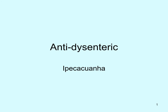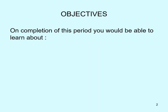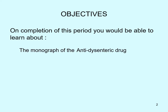Dear learners, today we will see the drug used in dysentery under the topic anti-dysentrics. The singular drug under this topic is Ipecacuna, also called Ipecac. The major objectives of this topic are that students are able to learn about the monograph of anti-dysentric drugs, i.e., Ipecacuna.